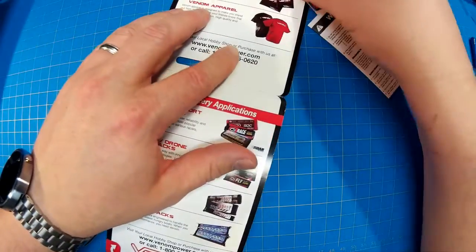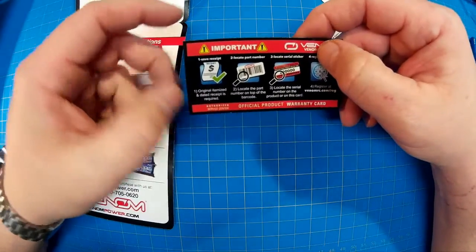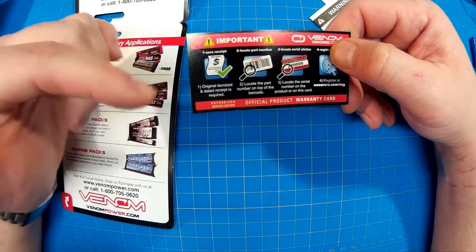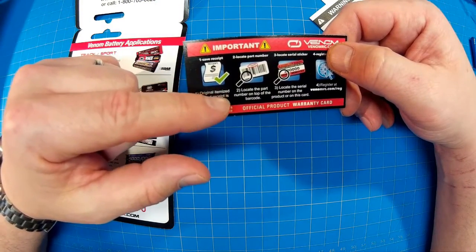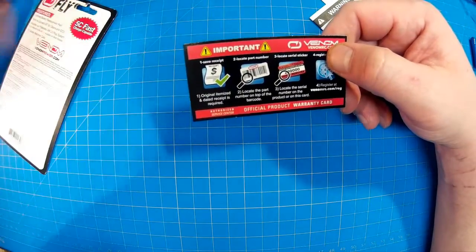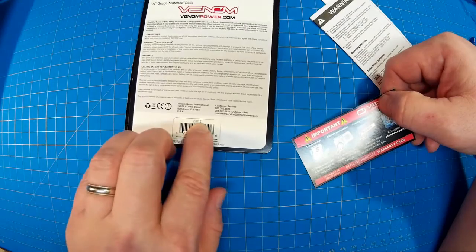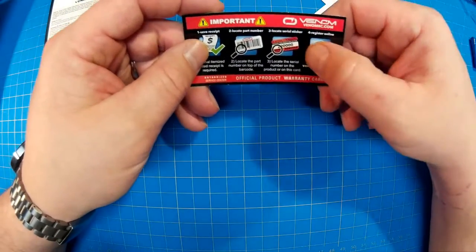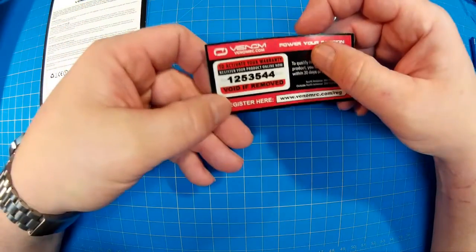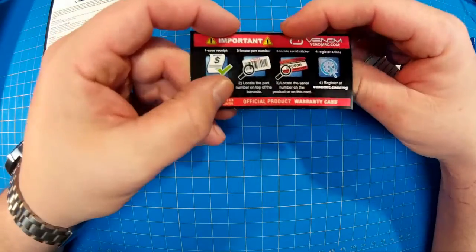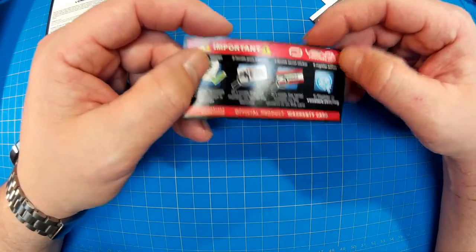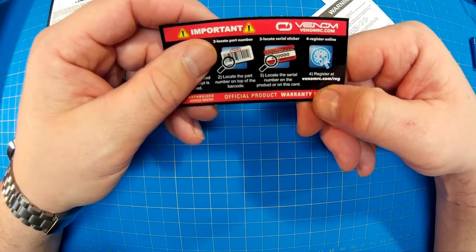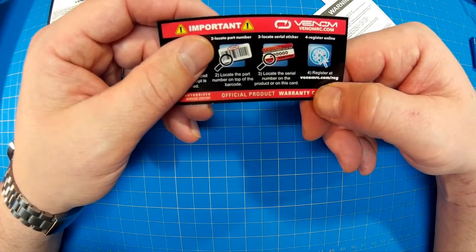And I have kids and activities and things like that I'm always hustling to. So that limited lifetime warranty that they reflect is pretty cool if it holds true. Now there is a caveat to it and we'll get to that here. This is what comes in the pack. Here's what I wanted to show you. There's a kind of a four step process. So you need the original itemized receipt which is probably in your email. You can locate the part number on the top of the barcode which I believe that number right there is the barcode. That's also probably in your email. And then you locate the serial number on the product on this card which is this. And I know you're probably thinking, don't show that on the internet. But you can't register these things right now.